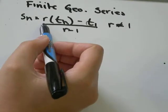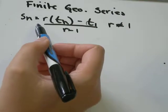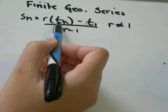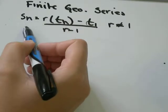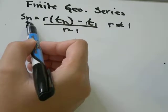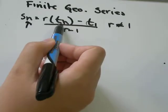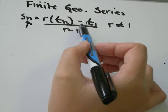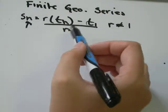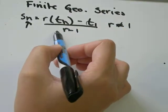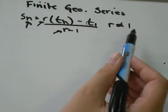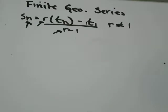R is the common ratio, which you find by taking, for example, the second term divided by the first term. Tn is the term at n, so it's the same n there. If you're finding the sum of the first 9 terms, this would be T9, and it would be the sum of the first 9 terms. Minus T1 is the first term over R minus 1, same R as that one. And we've got the rule that R cannot equal 1.